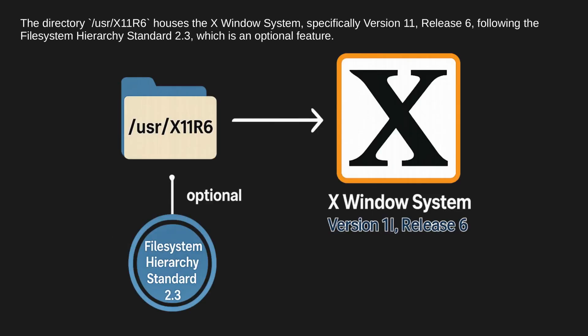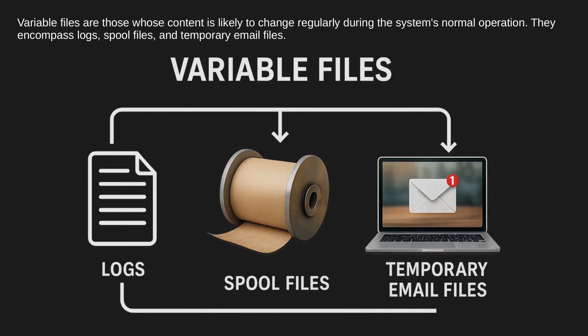The directory /usr/X11R6 houses the X Window System, specifically version 11, release 6, following the File System Hierarchy Standard 2.3, which is an optional feature. Variable files are those whose content is likely to change regularly during the system's normal operation. They encompass logs, spool files, and temporary email files.